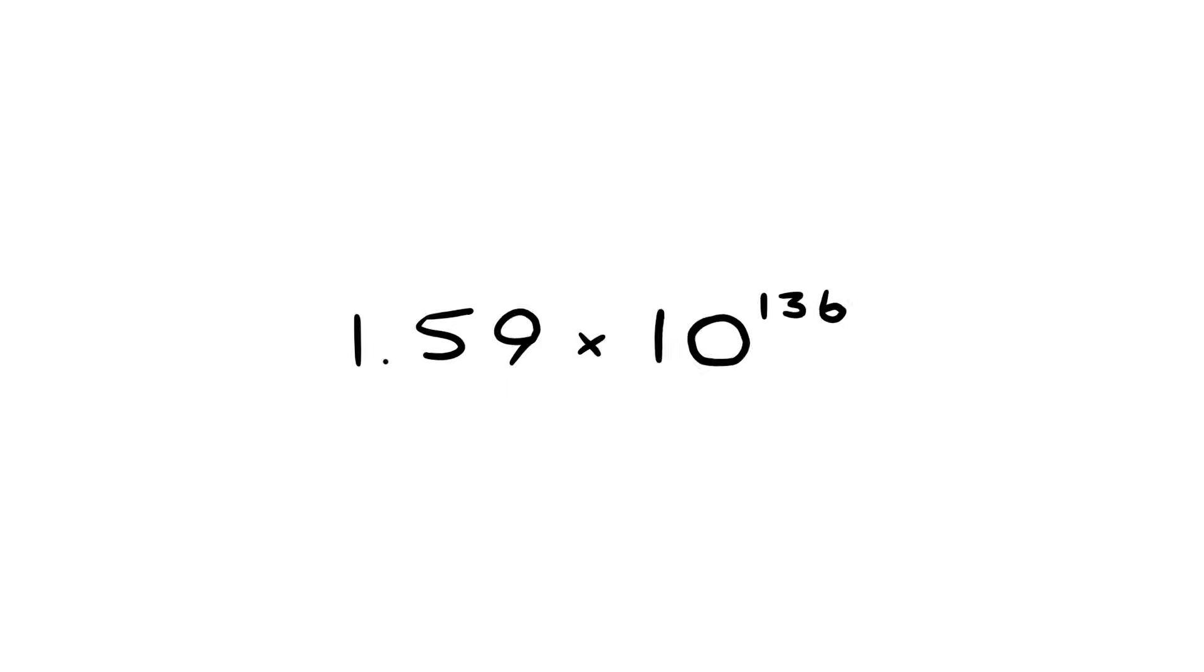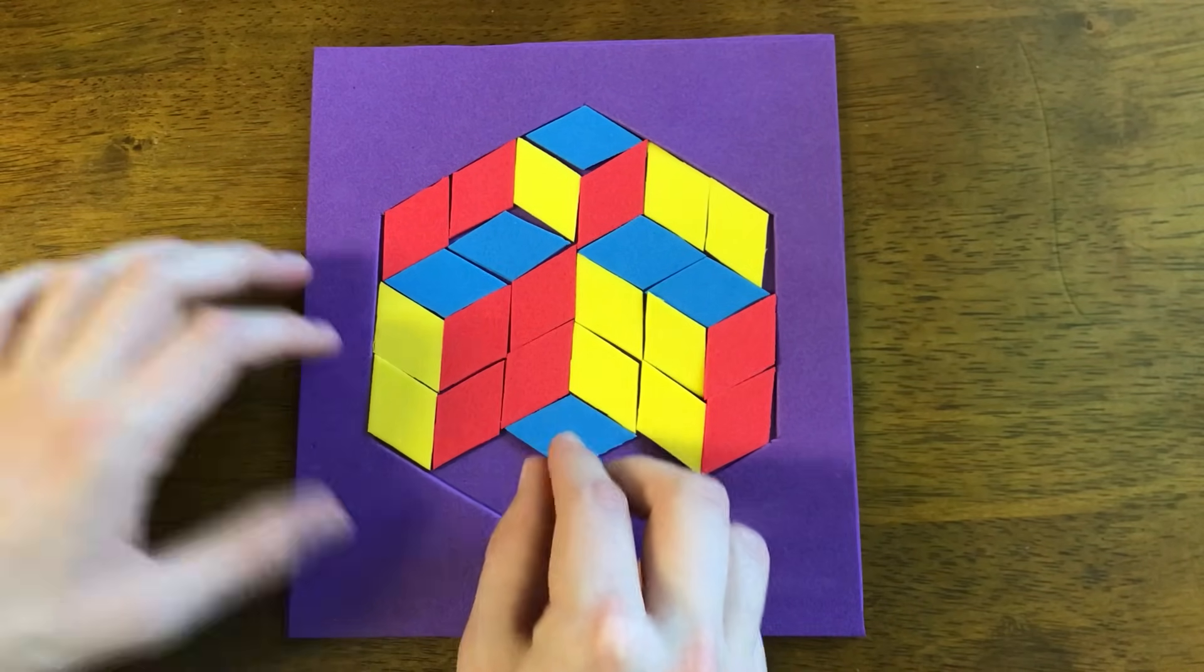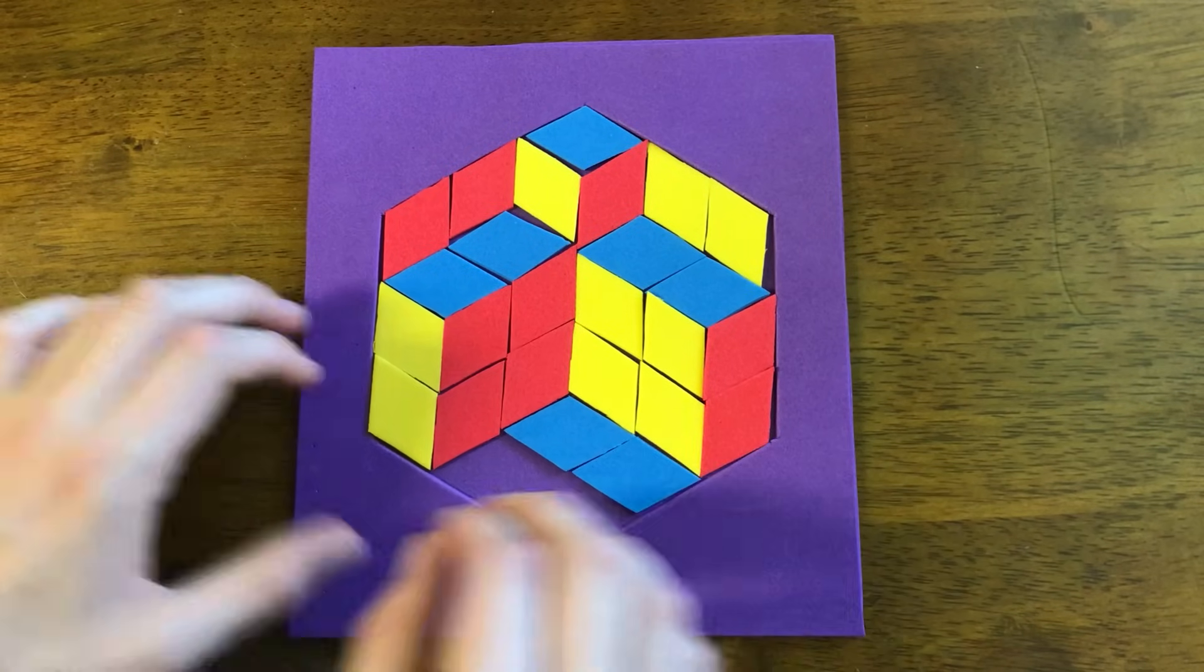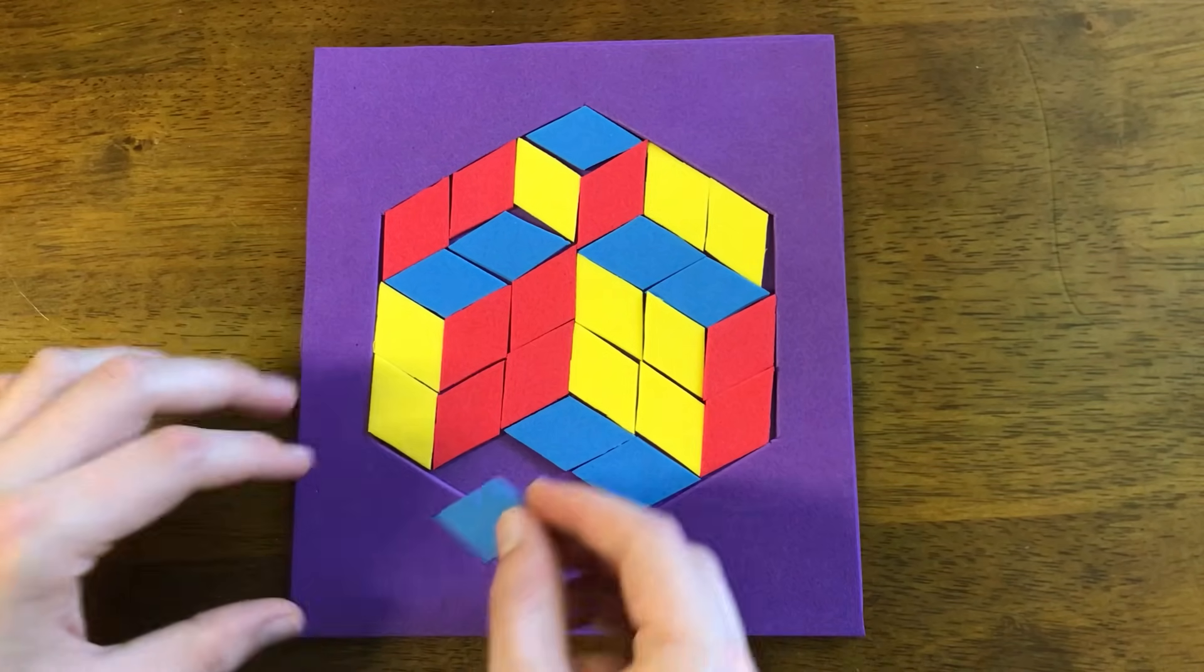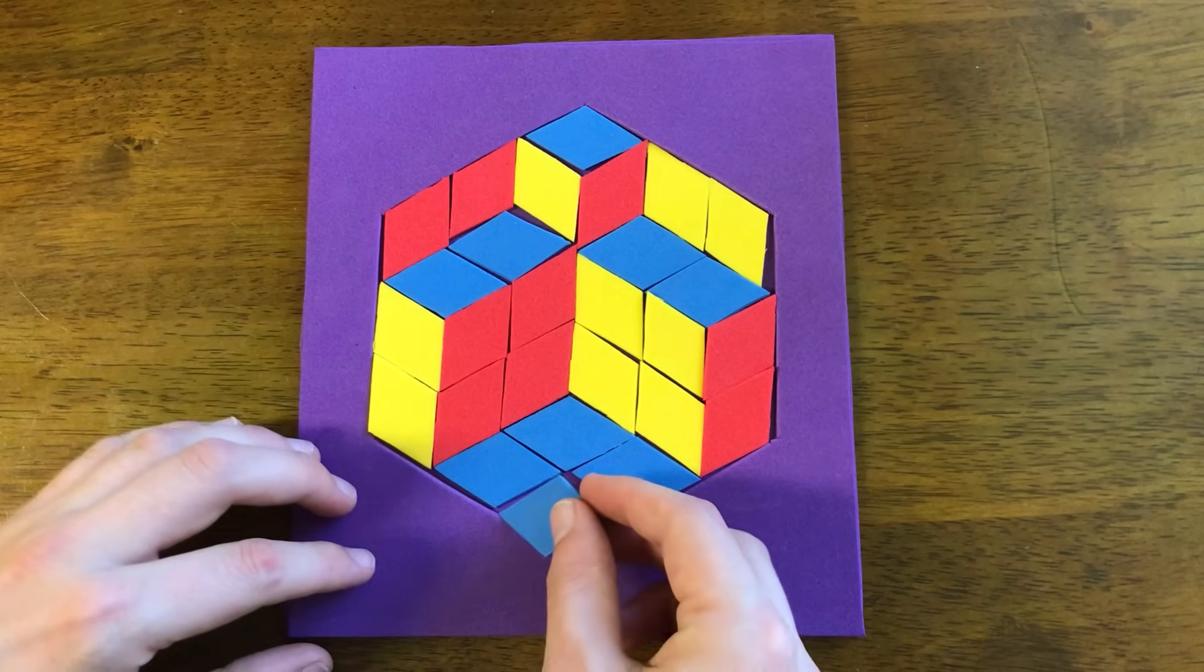But all of this is a lot less useful if we need to generate all 10 to the 136 solutions in order to get a picture like this. So how did I make this picture without spending trillions of years on a supercomputer? I could just come up with whatever solution is in my head, but the problem with that is it definitely won't be a uniform random sample. A human will probably tend to solve it in an orderly way.